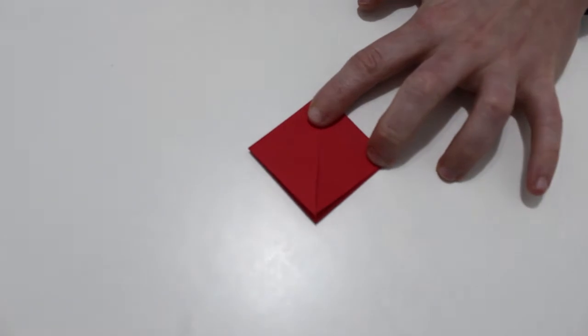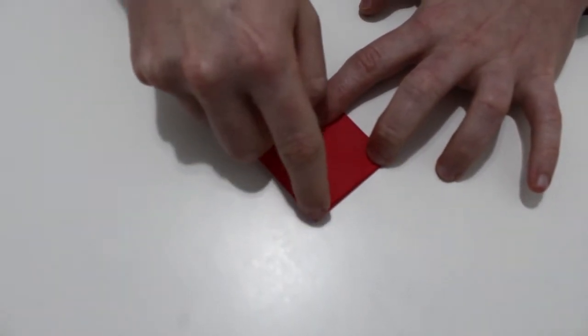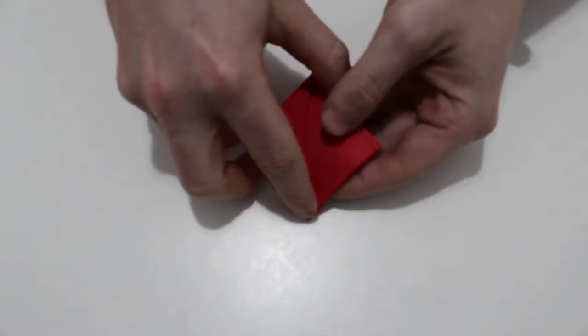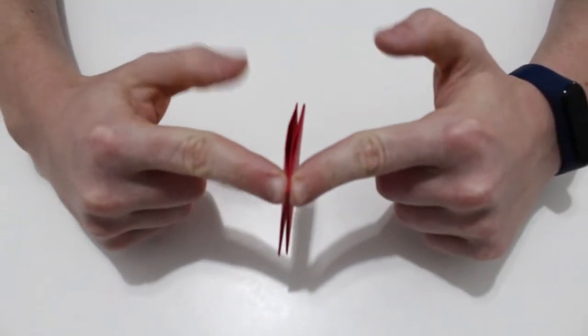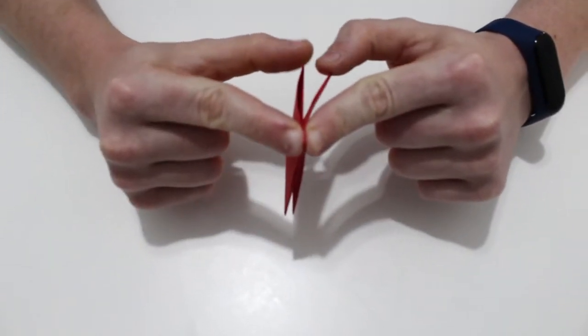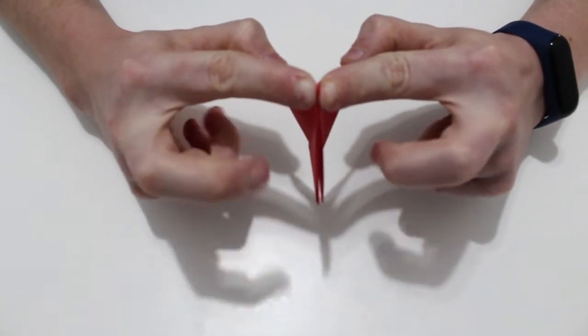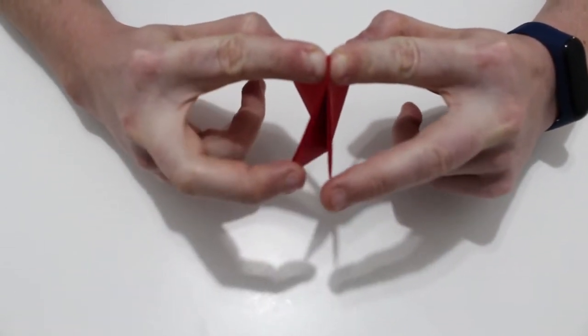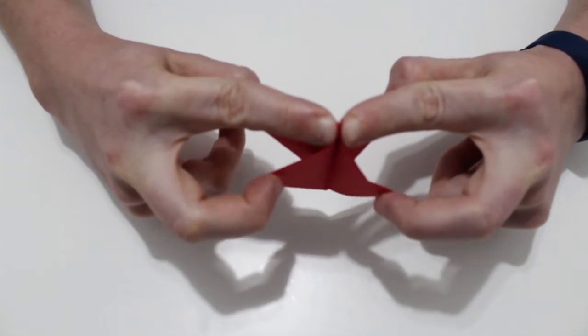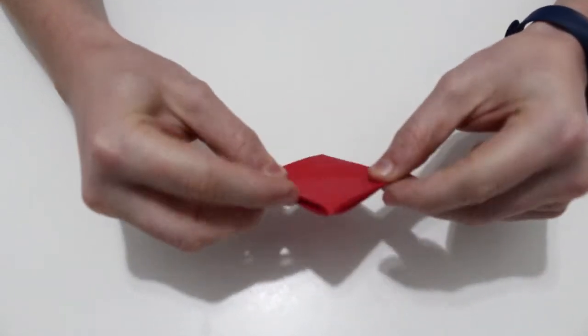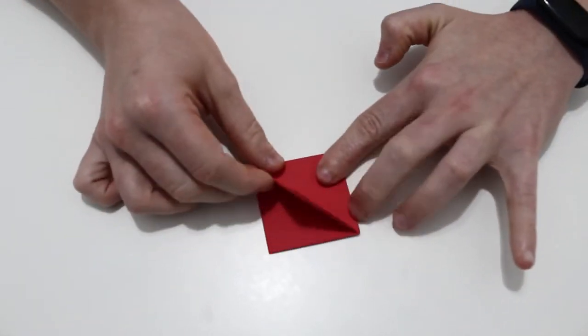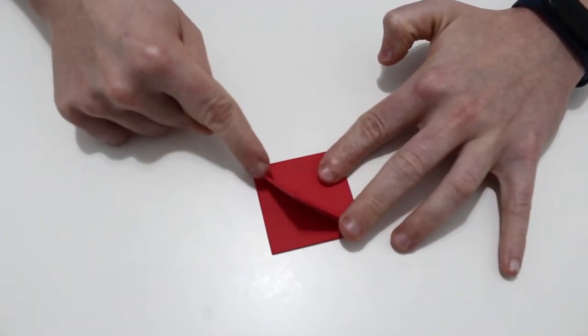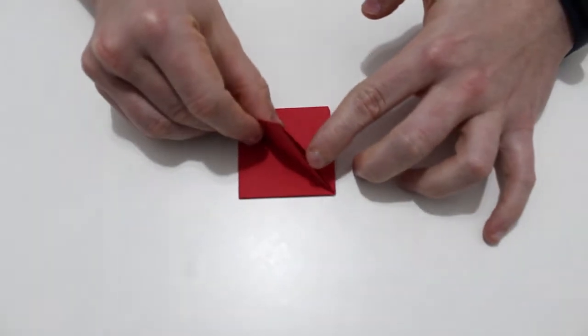Cuando lo tenemos así, vamos a poner el dedo índice en la punta de arriba con las dos manos. Ahora con los pulgares vamos a coger estas dos solapitas y con los dedos corazones estas dos, y vamos a juntarlas. Cuando lo tenemos así veremos que tenemos un lado cerrado y un lado abierto.